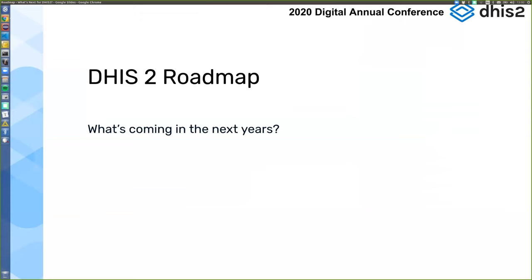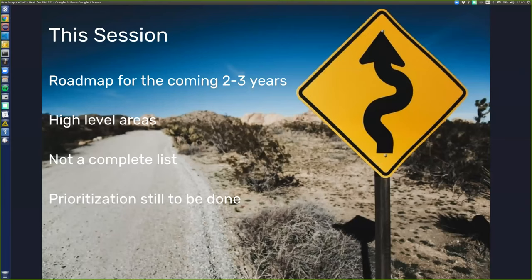Welcome to the last day and our session on the DHIS2 roadmap. Today we're going to present some of the things we have on the roadmap for the next two to three years. We're not going to talk about specific releases at this point — we'll talk more longer-term and won't go into detail on specific Jira issues, sticking to high-level areas.